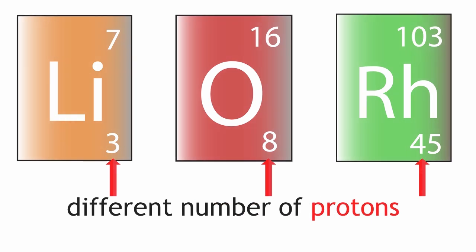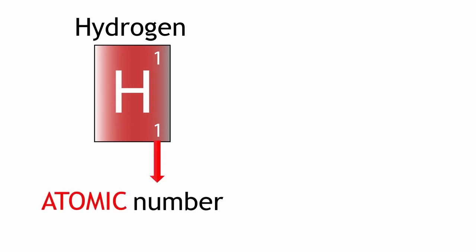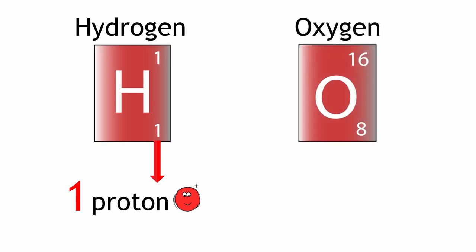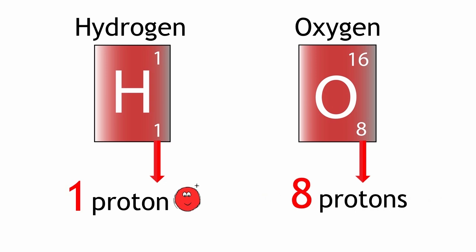For example, an atom of hydrogen has an atomic number of 1, because it has 1 proton. But an atom of oxygen has an atomic number of 8, because it has 8 protons.